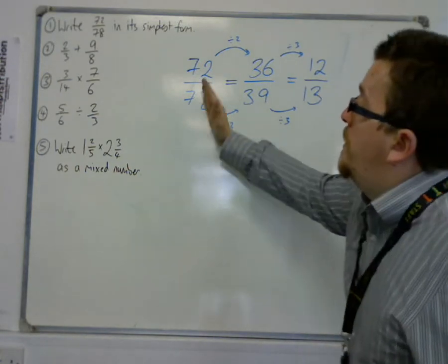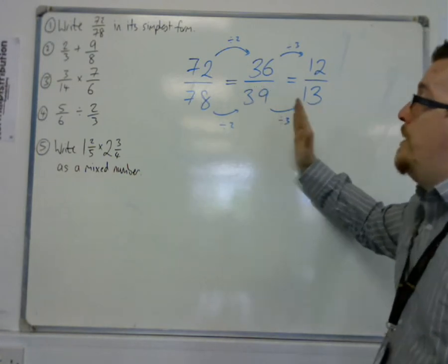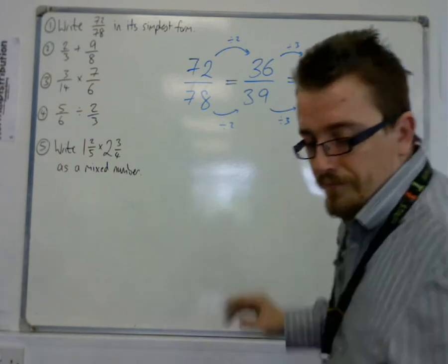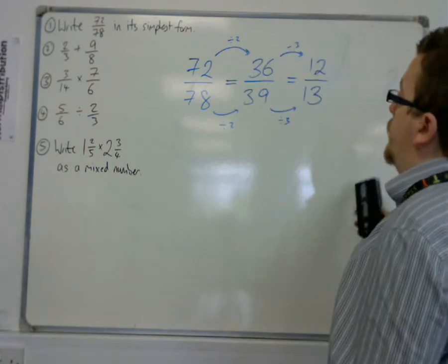So because you divided by 2, and then 3, you could have divided the top and bottom by 6, if you had spotted that factor. So that's simplifying a fraction.